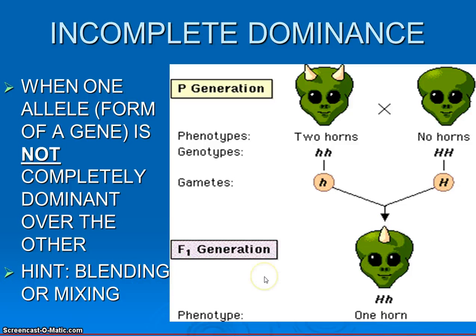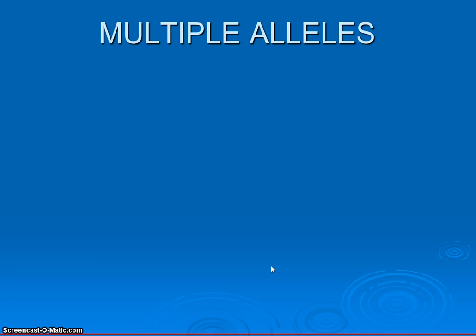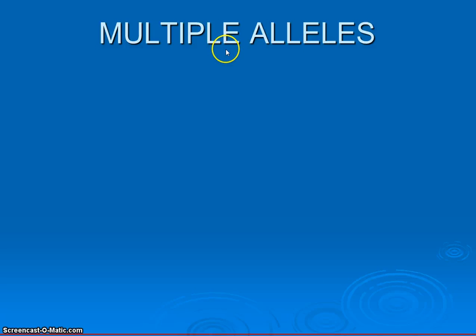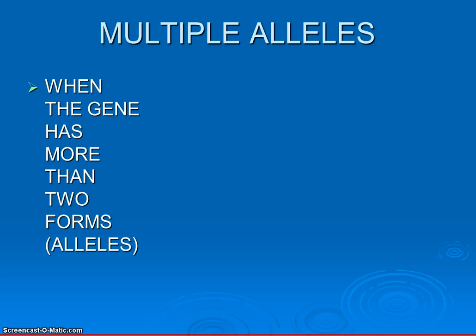So far, co-dominance and incomplete dominance are pretty easy and pretty straightforward. The next one, multiple alleles, is a little bit different, but if we tackle this using just vocabulary, it's not that bad. The name obviously contains the word alleles, which are different forms of a gene, and it has multiple alleles. So instead of having just two alleles — like big A and little a — we would have at least three different forms of a gene.